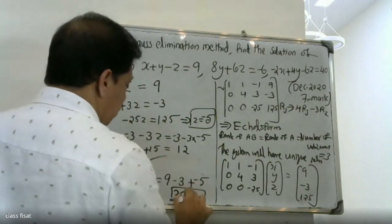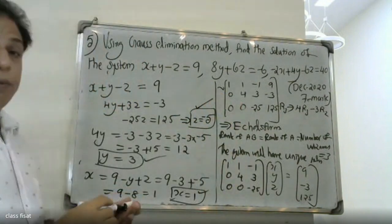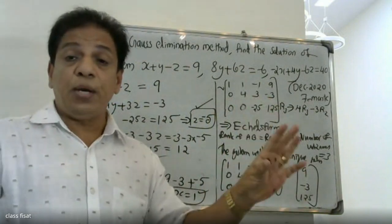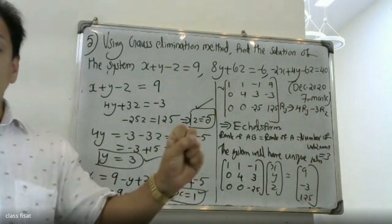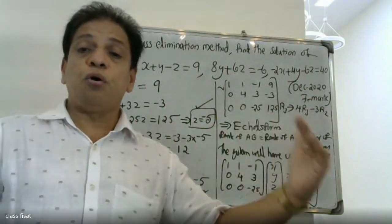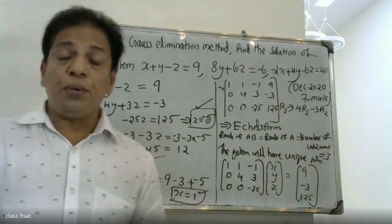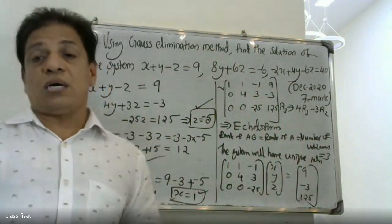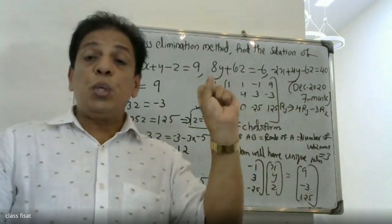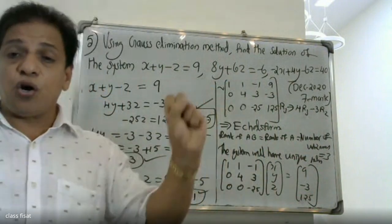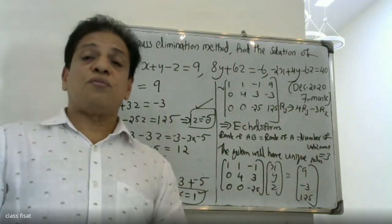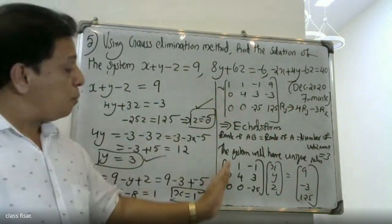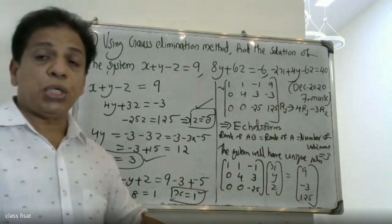The x value is 1, y value is 3, and z value is minus 5. The system has a unique solution. The rank of augmented matrix A|B equals the rank of A, which equals the number of unknowns, therefore the system has a unique solution.